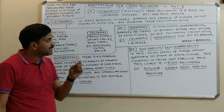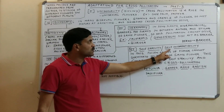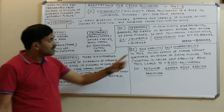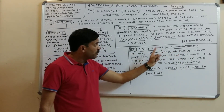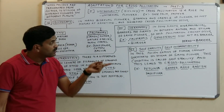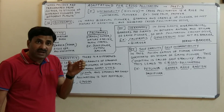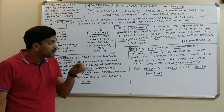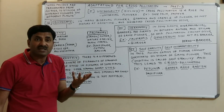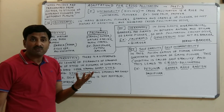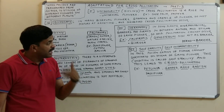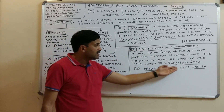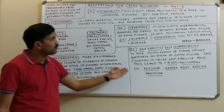The fifth adaptation is self-sterility, also called self-incompatibility. In a bisexual flower, the pollen grains of the flower cannot germinate on the stigma of the same flower. This prevents self-pollination and favors cross-pollination. Self-sterility is seen in Petunia, grapes, apple, radish, Passiflora, etc.